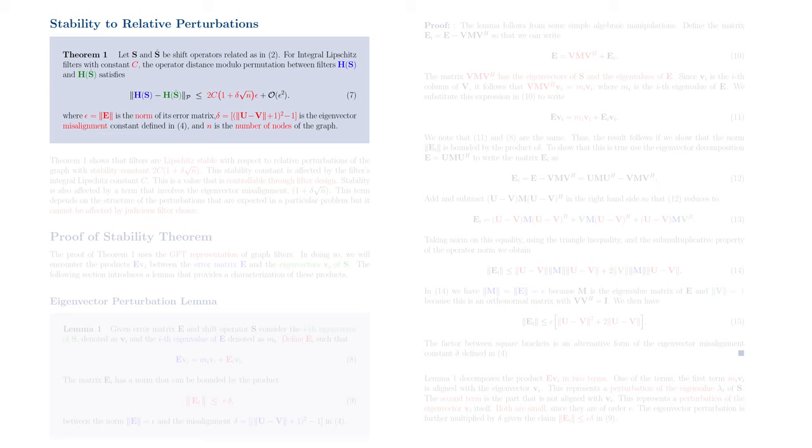plus a term that is of order epsilon squared. In this bound, epsilon is the norm of the error matrix, delta is the eigenvector misalignment constant we just defined, and n is the number of nodes of the graph.